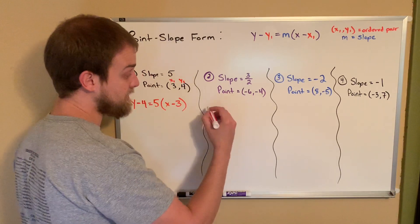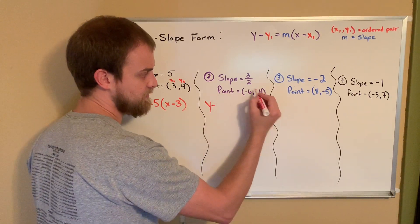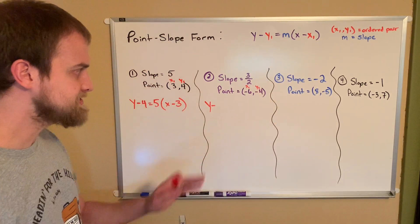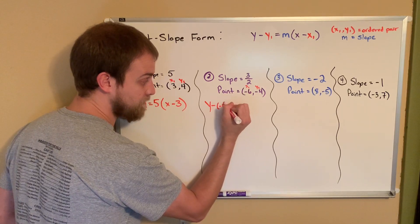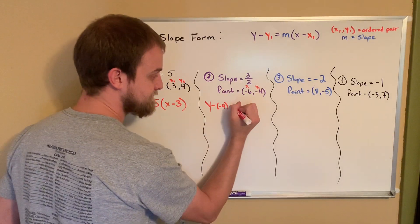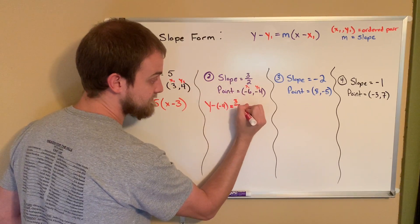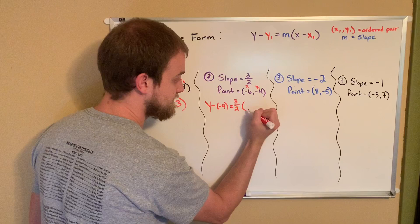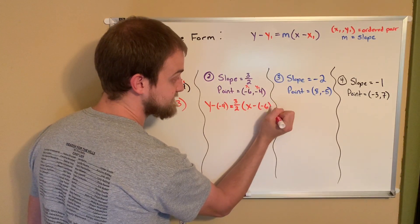Looking at number 2, it's the same idea. We're going to do y minus, well, x sub 1, y sub 1. Notice that my y is negative, and we'll come back for this, but I'm going to do y minus negative 4. We can keep that for now and continue. Equals m. m is my slope. 3 halves. Parenthesis. x minus x sub 1, which is negative 6.